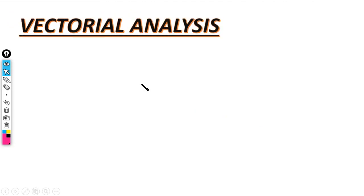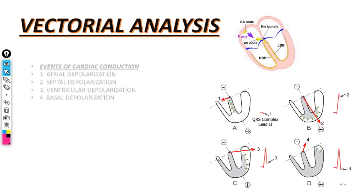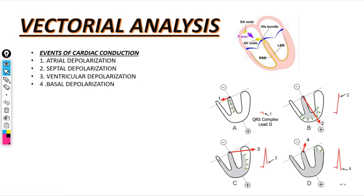Let's see about Vectorial Analysis. Two diagrams are given here for Vectorial Analysis. Events of Cardiac Conduction: Atrial Depolarization occurs from the SA node to the AV node, and its direction is downwards and leftwards. It is also known as the P-Axis.